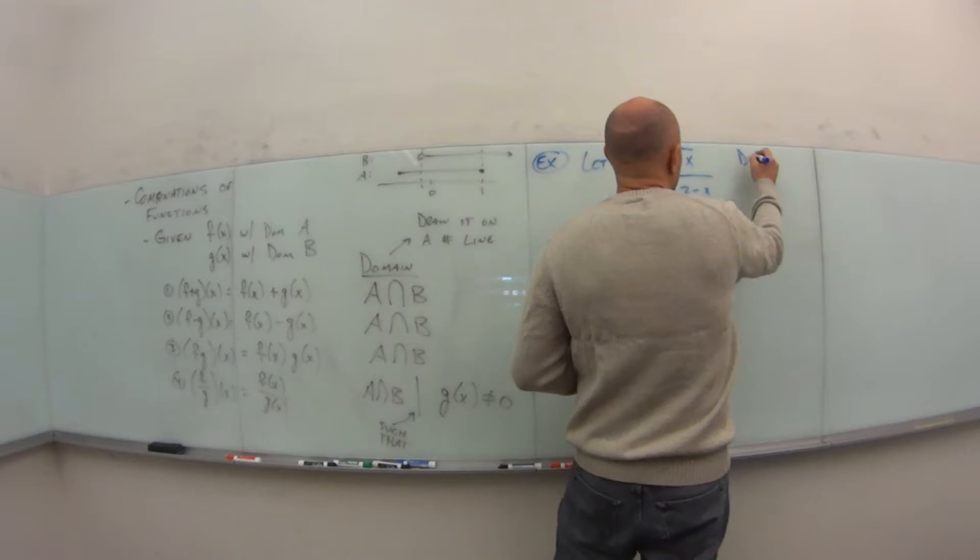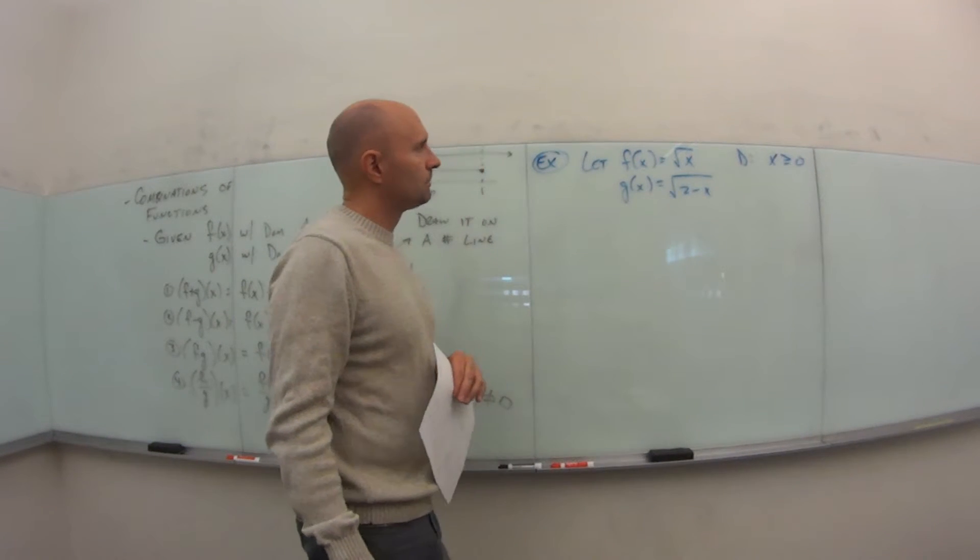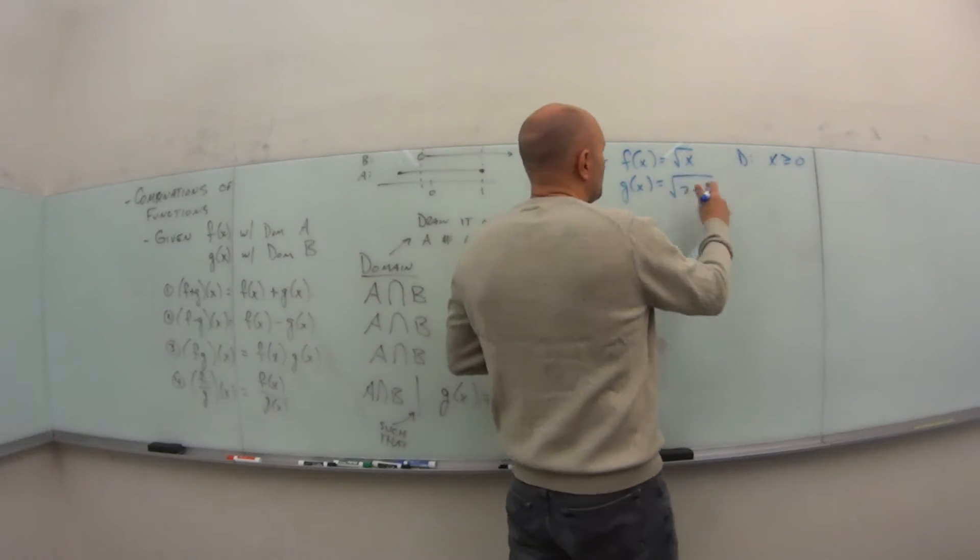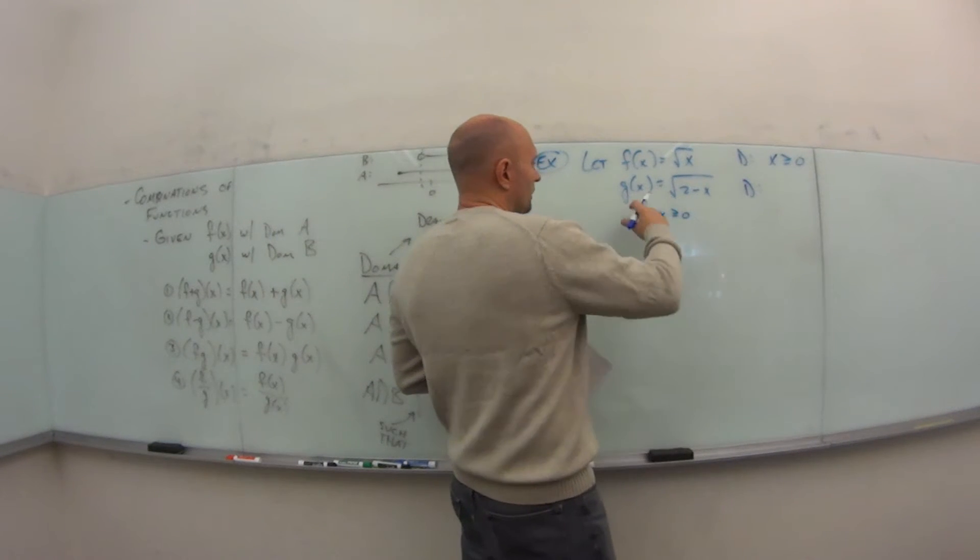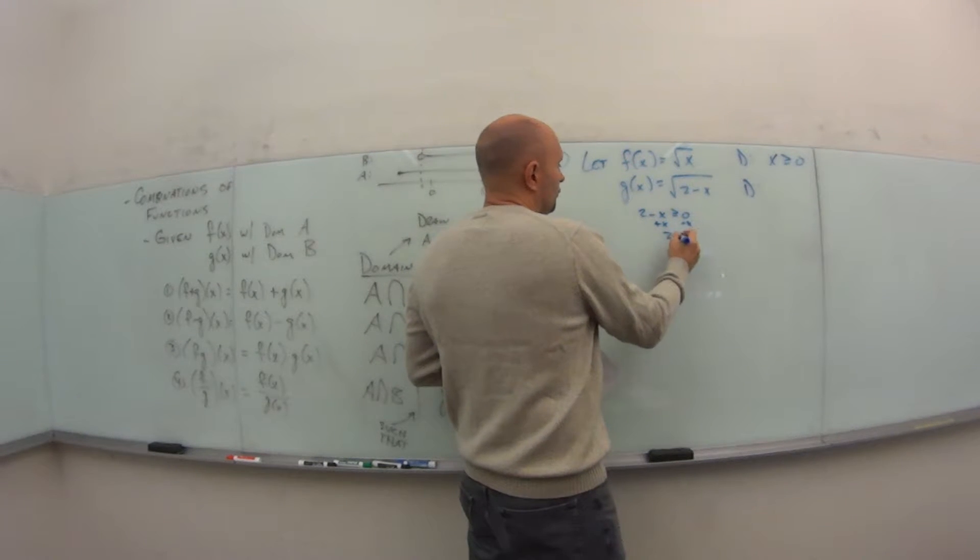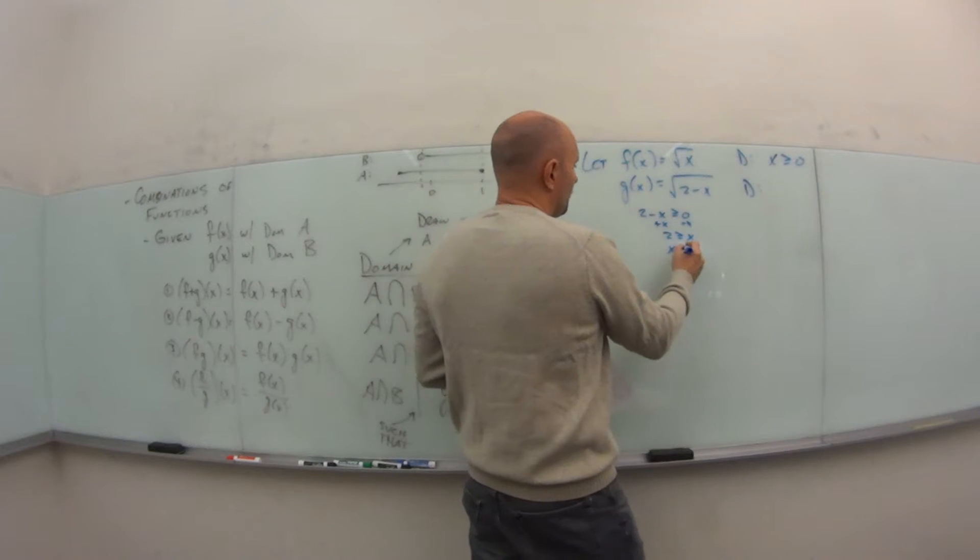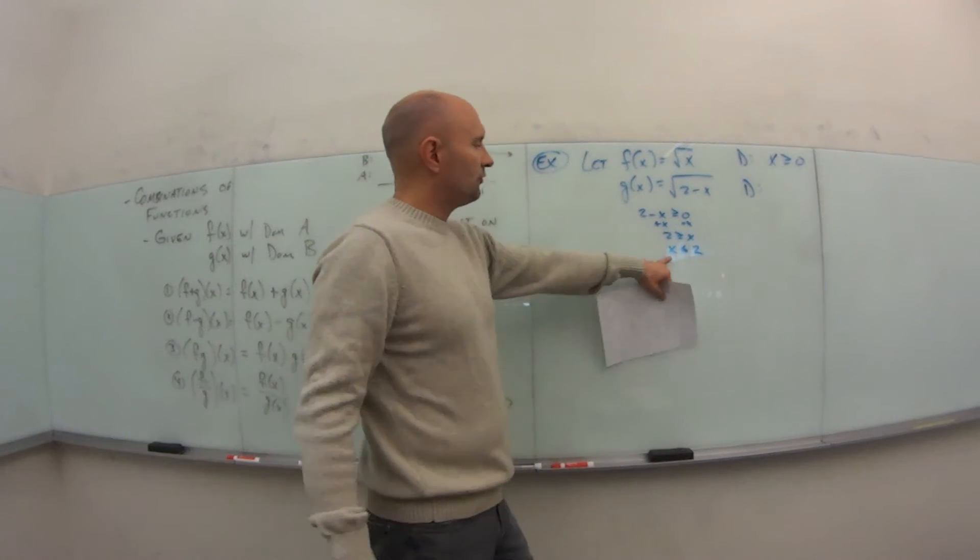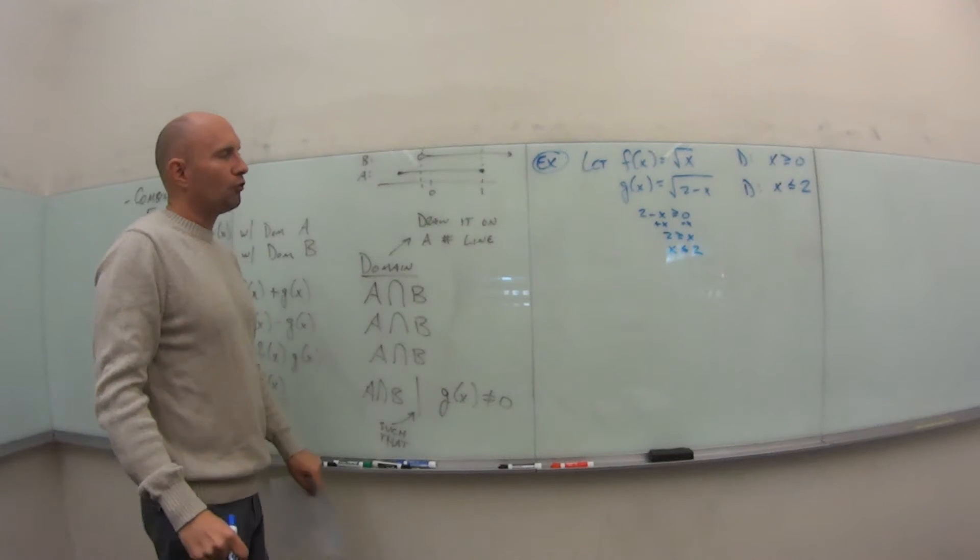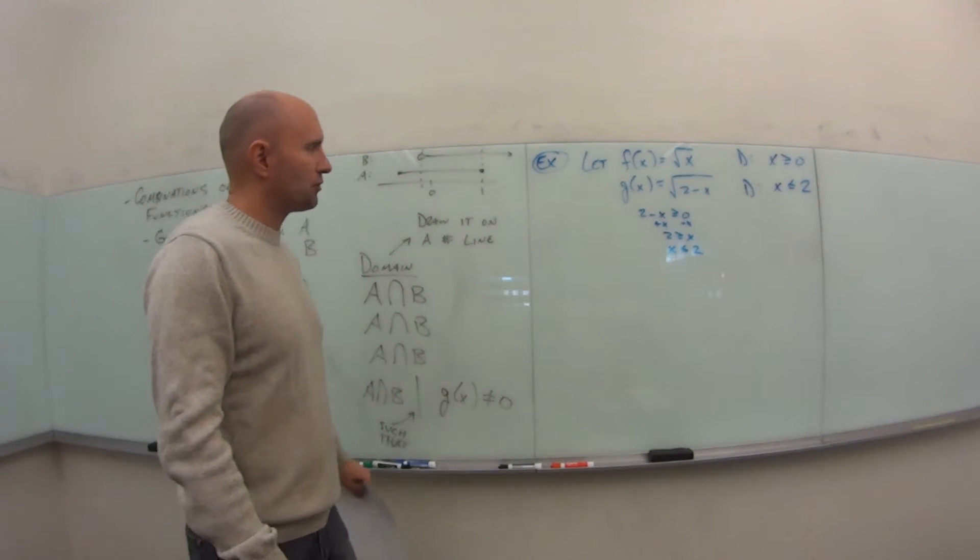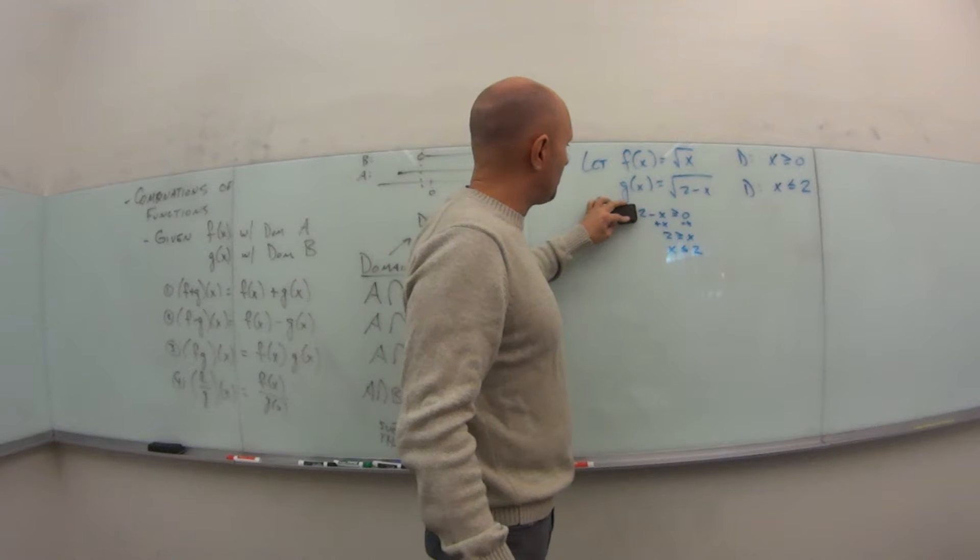So for f of x, my domain is what? Well, x has to be positive, so x has to be greater than or equal to zero. For g of x, my domain is what? 2 minus x has to be greater than or equal to zero. So if I add x to both sides, that says 2 is greater than or equal to x. If I flip-flop the sides, I got to switch the sign. The arrow is pointing to the x, so if I reverse them, it still has to point to the x. So it's basically just telling me x is less than or equal to 2. Hopefully you're okay with inequality algebra. If not, maybe go back and try to refresh your memory on that a little bit, because we will be using that quite a bit throughout the semester as well.